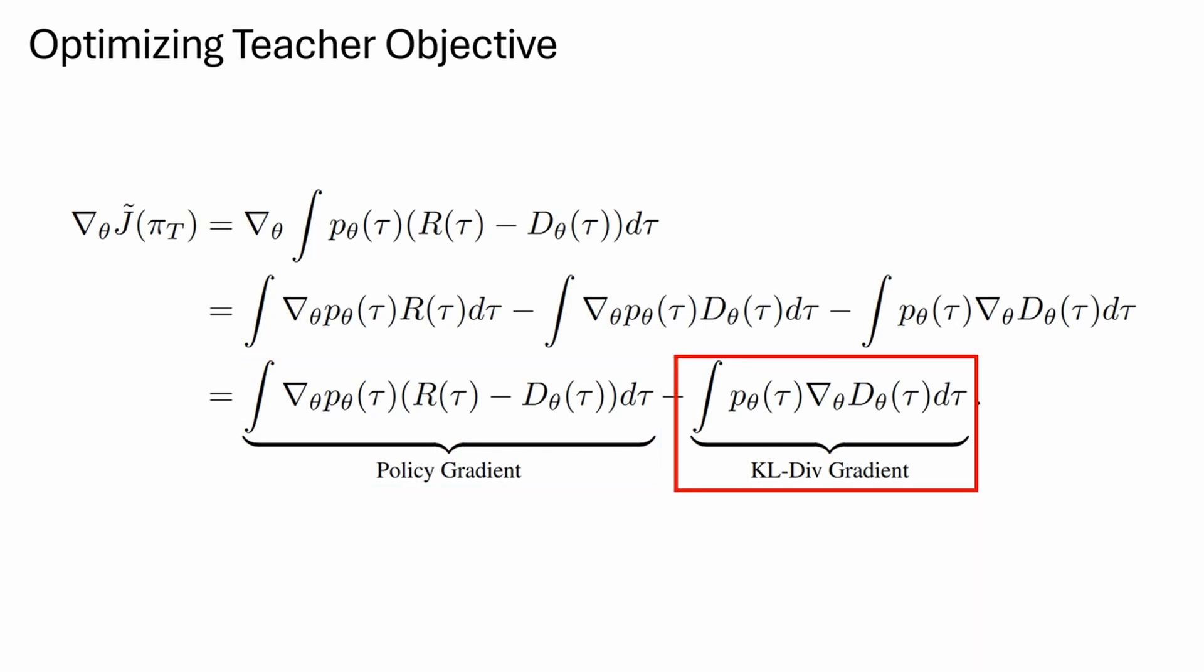The second KL divergence represents a direct supervision on the teacher weights by enforcing the prediction of the same action distribution as the student.